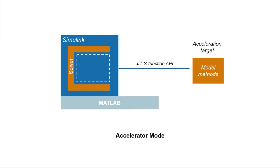With accelerator mode, a just-in-time acceleration technique is used to generate code for portions of the model methods in memory. Running this compiled code has less runtime overhead than normal mode's block-by-block execution, resulting in a shorter simulation execution. However, compiling this acceleration target usually takes extra time, which is why you see an increase in the initialization time.